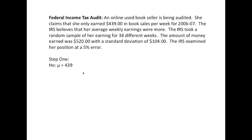Now, the first thing that you would do in step one is you write the null hypothesis. Mu equals 439. That's the claim. Step two is the alternate hypothesis. The IRS believes that her earnings were more than 439. So our alternate hypothesis is going to be that Mu is greater than 439.